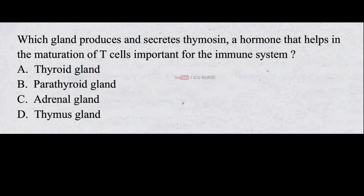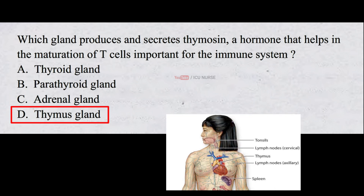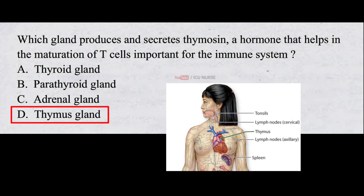Which gland produces and secretes thymosin, a hormone that helps in the maturation of T cells important for the immune system? A. Thyroid gland B. Parathyroid gland C. Adrenal gland D. Thymus gland. The correct answer is D. Thymus gland. The thymus gland produces and secretes thymosin, a hormone that helps in the maturation of T cells important for the immune system.